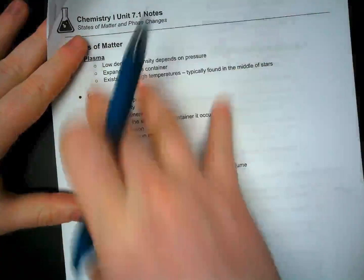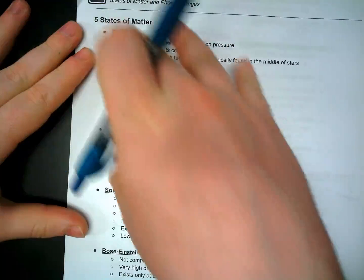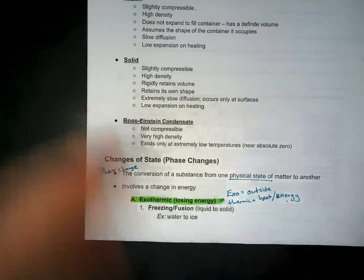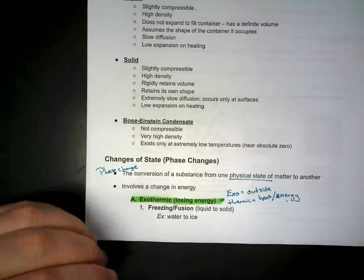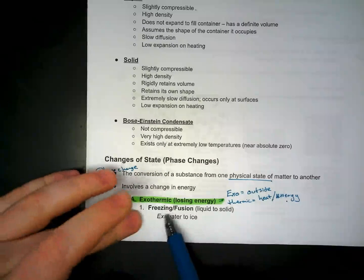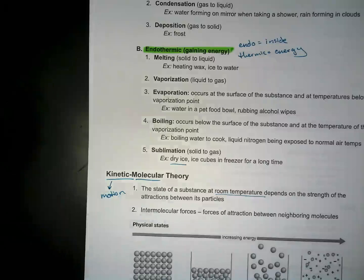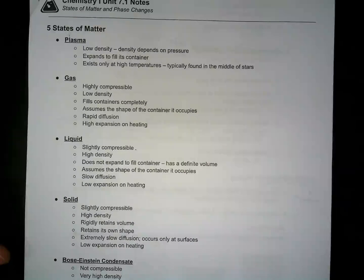And that's pretty much it, guys. What you need to know: the majority of the characteristics associated with the particular states of matter; the difference between exothermic and endothermic reactions and their definitions; and specifically what kinds of phase changes are exothermic — freezing, deposition, condensation — and what are endothermic — melting, vaporization, boiling, and sublimation. That's what you need to know through these notes. If you still have any questions, make sure you get a hold of me. I'll see you guys in the next one.